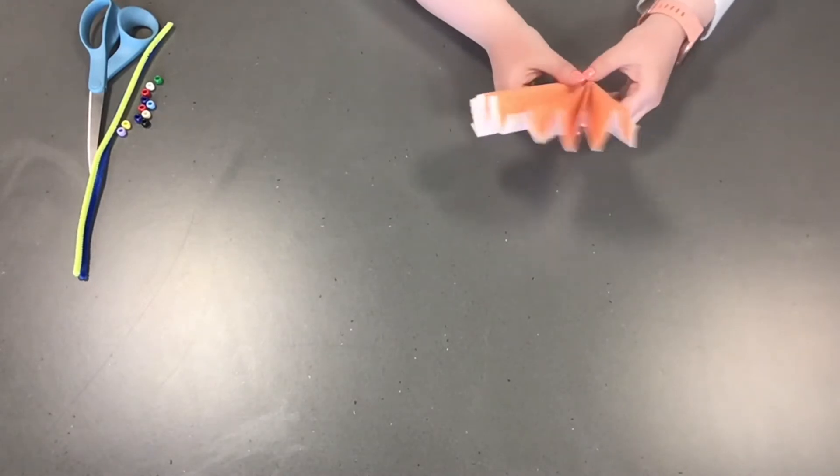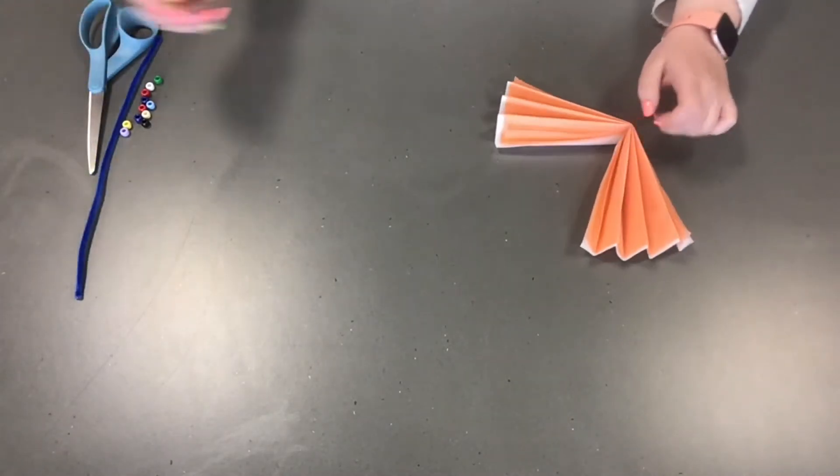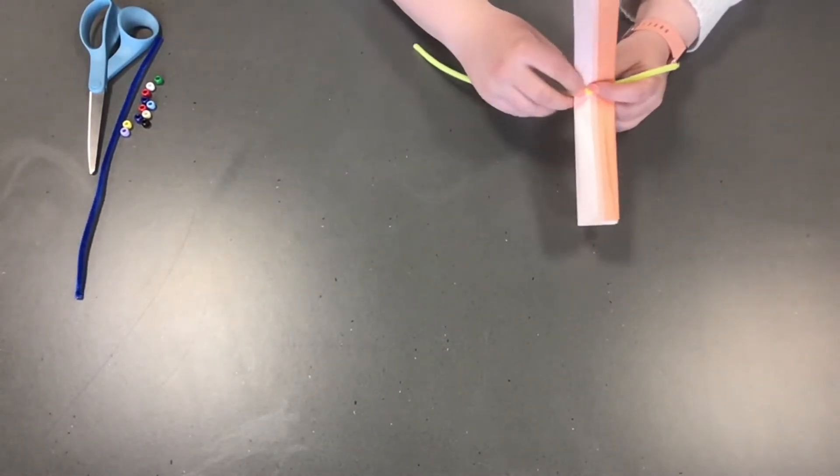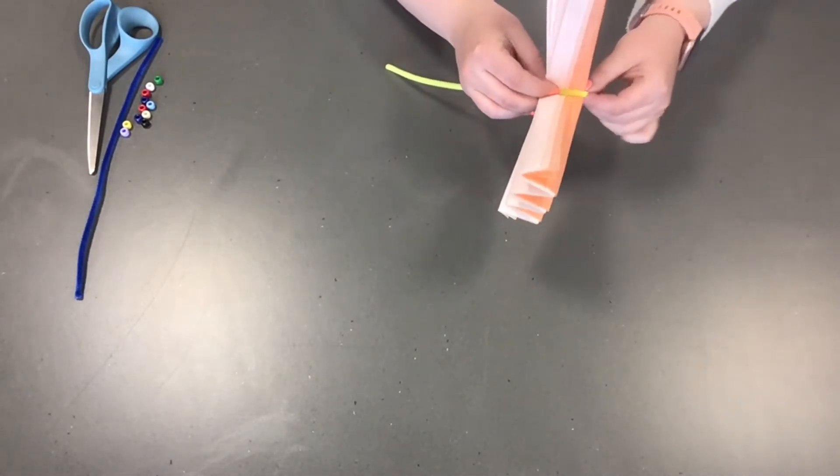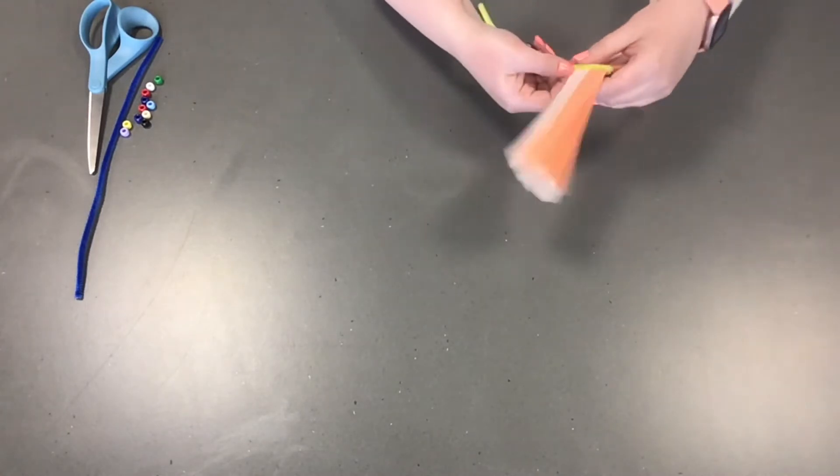And this is when I'm going to take one of my pipe cleaners. I think I'm going to use this really bright neon yellow. I think it's really pretty. And I'm going to put it in the middle here. And then what I'm going to do is I'm going to fold it and twist it.